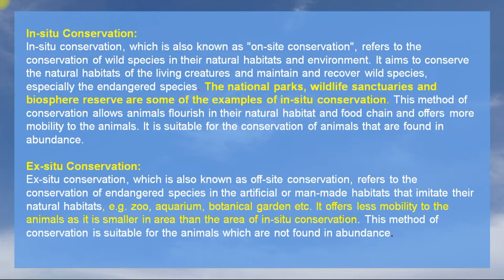There are two terms: in-situ conservation and ex-situ conservation. When we talk about in-situ conservation, organisms are kept in places like National Parks, Wildlife Sanctuaries, and Biosphere Reserves. In-situ conservation means on-site conservation — it refers to those wild species that are kept in their natural habitat and environment. The main aim is to conserve the natural habitat of the living creature and maintain and recover wild species.